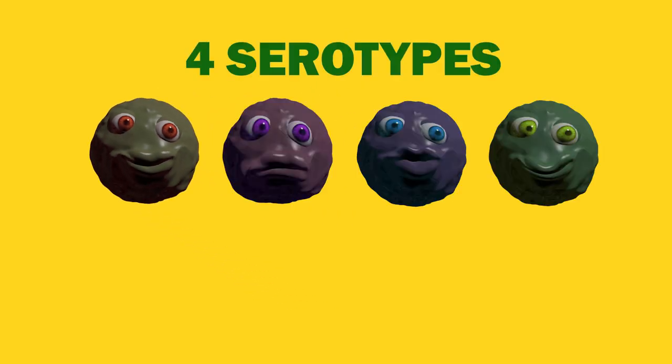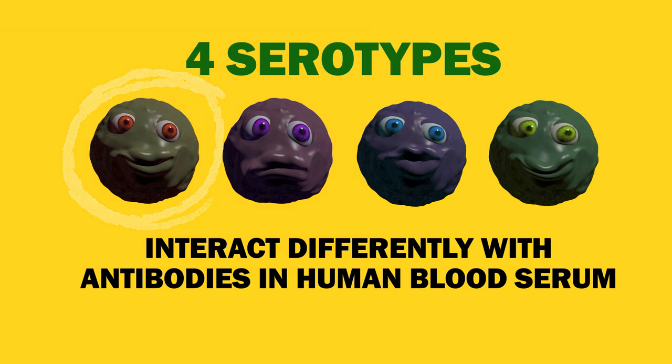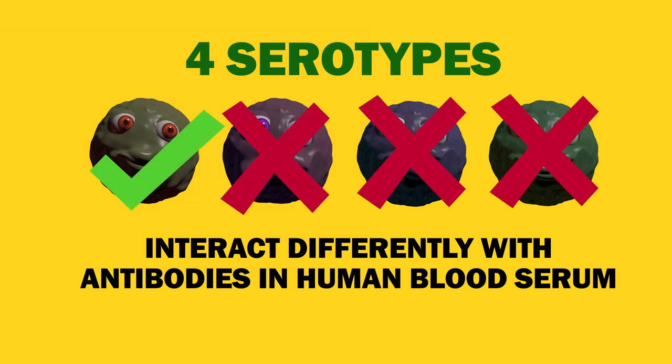One characteristic of dengue that makes it difficult to treat is the fact that it has four serotypes. The serotypes are closely related but interact differently with antibodies in human blood serum. Although someone infected with one serotype will develop lifelong immunity to that serotype, they will not be protected against the others.